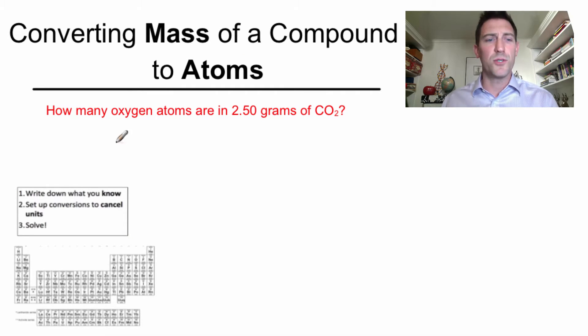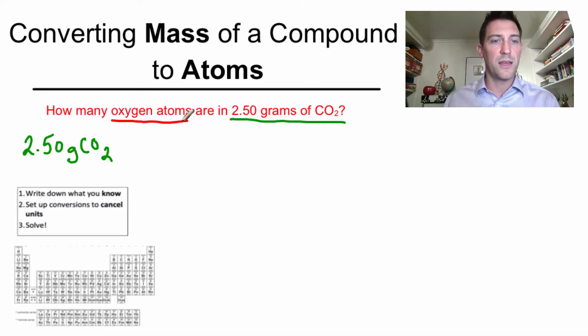We're going to use the same process we've been using all the time with moles, these three simple steps. The way we do that is we always figure out what is known or what is given, and then we write that down. We're not going to change anything now that we're getting to the more complex ones. So 2.50 grams of CO2. I want to get my answer in oxygen atoms at the end. The way I do that is just cancel units. So I'm going to set up a conversion to cancel the units, which means I need a conversion factor that has grams of CO2 on the bottom.